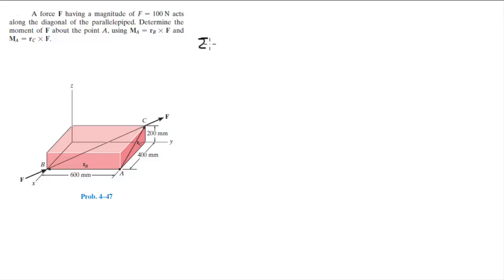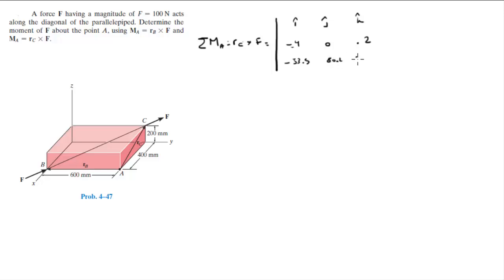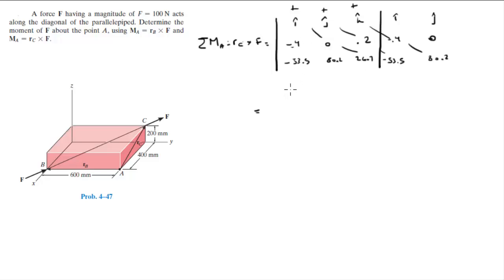Now using the second formula, the moment about A as Rc cross F: draw the matrix with I, J, K; Rc = [−0.4, 0, 0.2] on the second row; force vector [−53.5, 80.2, 26.7] on the last row. Redraw the first and second columns. Positive diagonals: I times (0)(26.7) = 0; J times (0.2)(−53.5) = −10.7j; K times (−0.4)(80.2) = −32.1k.